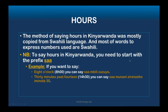For example, one in Swahili is 'moja,' and when we say seven in Kinyarwanda we say 'samoya' — you can see the 'moya' and 'moja' are related. In Kinyarwanda you need to add the prefix 'sa-' to every hour. This prefix 'sa-' is a must.